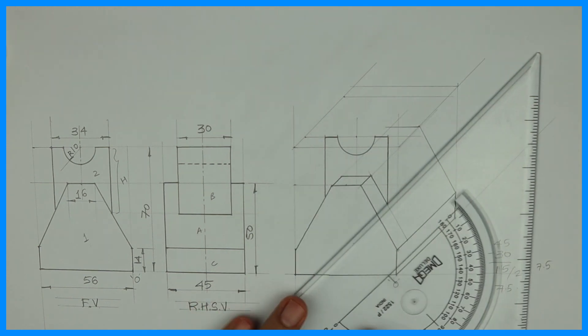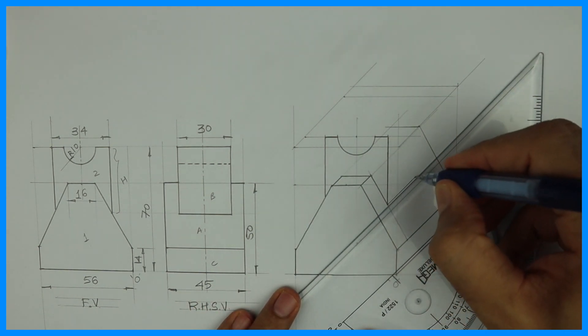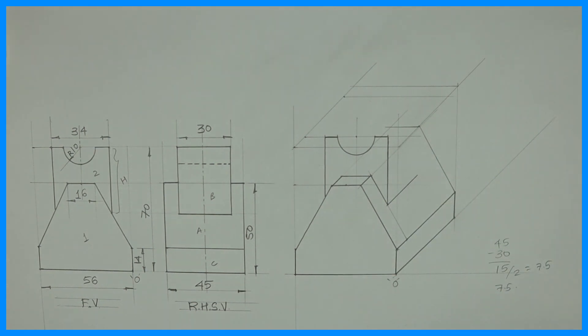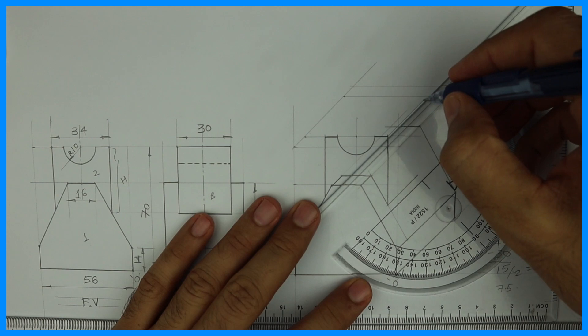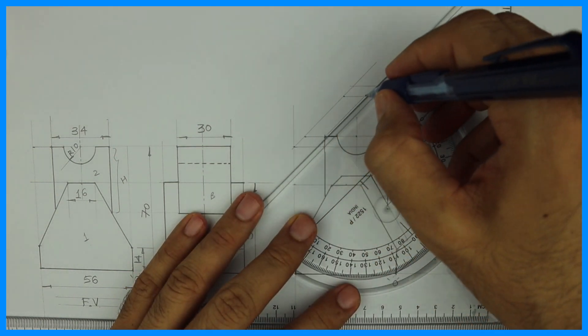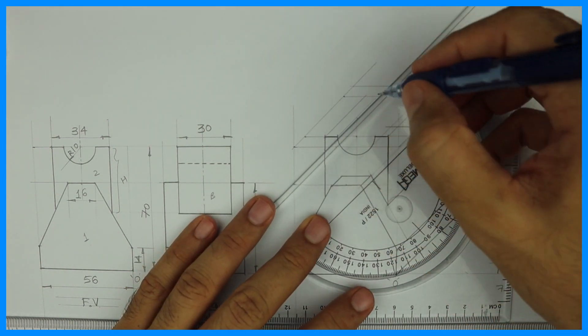Then you take this behind. How much you have to go behind? 30. This also you have to go behind by 30. All the points you take behind by 30.